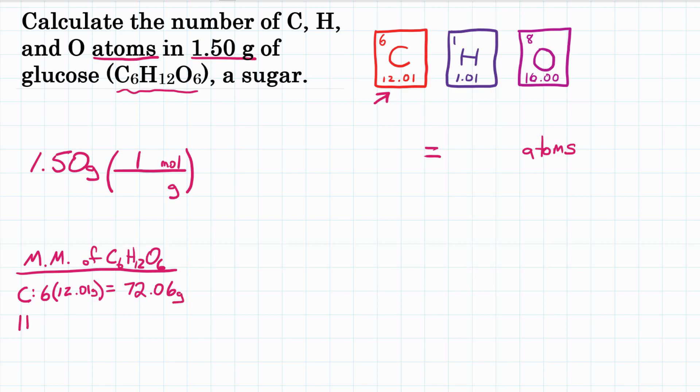For hydrogen, there are 12 moles for every 1 mole of glucose. Looking at our periodic table, hydrogen is about 1.01 grams per mole. We multiply those together to get 12.12 grams.